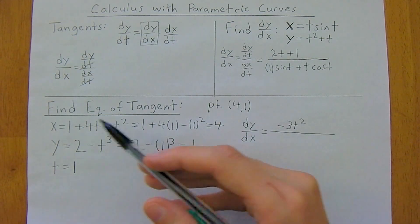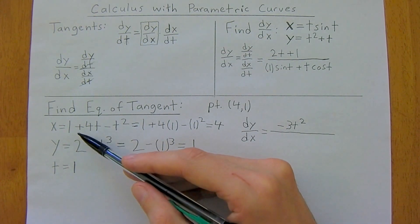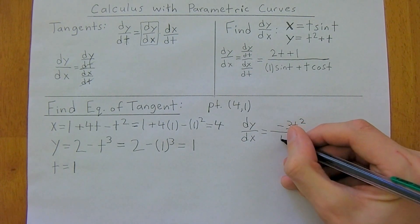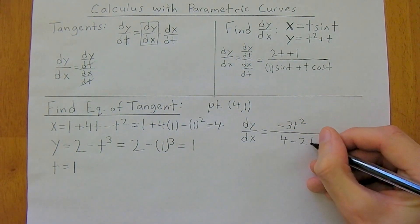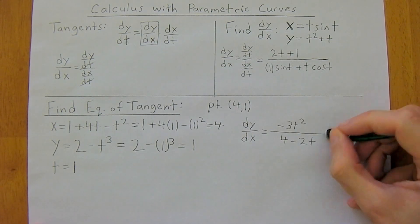And then on the bottom, the derivative of x is just going to be 4 minus 2t. So 4 minus 2t. And this is our derivative now.